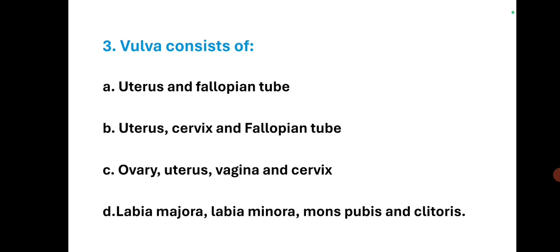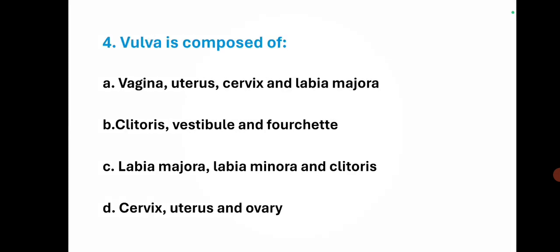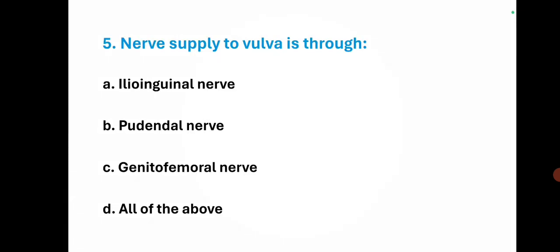Vulva consists of — the right option is — the labia majora, labia minora, mons pubis, and clitoris. Vulva is composed of — the right option is B — clitoris, vestibule, and fourchette.